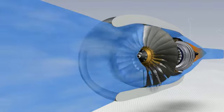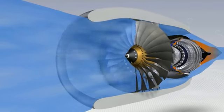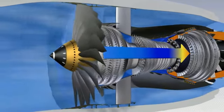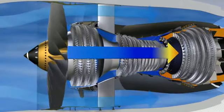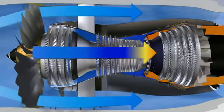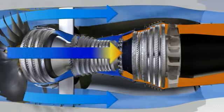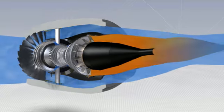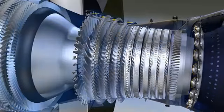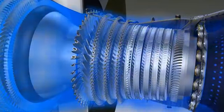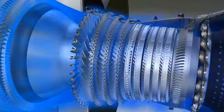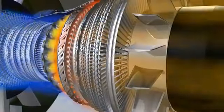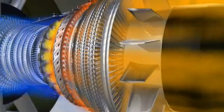The CFM56-7B is a high bypass ratio engine. The primary flow passes through the combustor, while the secondary flow passes only through the fan. 80% of the engine airflow, accelerated by the fan, is directed into the bypass duct and provides 80% of the engine's thrust. The primary flow passes in succession through the compressors, the combustor and the turbines, before being ejected rearwards through the exhaust assembly.